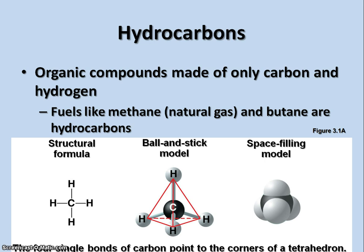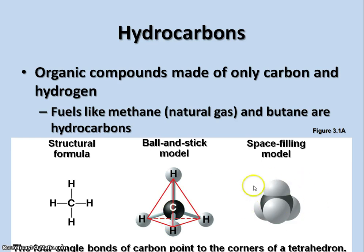Another model you would sometimes see is a ball-and-stick model. If you had models to put together like tinker toys, you could put it together with the central carbon atom. This shows the relative geometric relationship of the atoms to each other. Finally, we have a space-filling model that shows the space that would be filled by the electron cloud in the atoms present in the molecule.